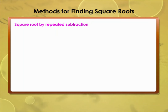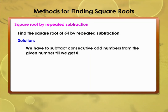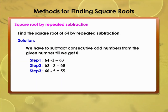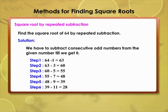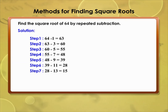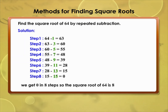Square root by repeated subtraction — find √64: subtract consecutive odd numbers until we reach 0. Step 1: 64−1=63; Step 2: 63−3=60; Step 3: 60−5=55; Step 4: 55−7=48; Step 5: 48−9=39; Step 6: 39−11=28; Step 7: 28−13=15; Step 8: 15−15=0. We reach 0 in 8 steps, so √64 = 8.